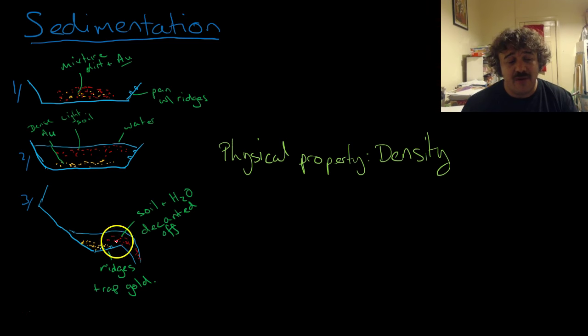And because you're decanting it, all the light stuff pours off and your gold will stay here. Now when you do panning, you have ridges on the pan, and the ridges are there to give a bit of extra protection to stop you pouring your gold in the river.